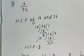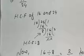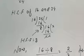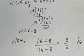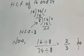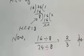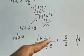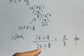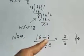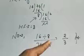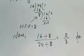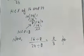Aap kya karenge — in dono numbers ka GCF find out kar lenge. Hum logon ne GCF nikalna pehle hi seekh liya hai. To jab inका GCF find out kiya jayega 16 and 24 ka, then the value will be 8. Ab is GCF se numerator aur denominator dono ko divide karein. Yahan dekhiye — GCF 8 aaya hai, to maine 8 se 16 ko bhi divide kiya aur 24 ko bhi. 16 ÷ 8 = 2, aur 24 ÷ 8 = 3. So now 2/3 is in simplest form.